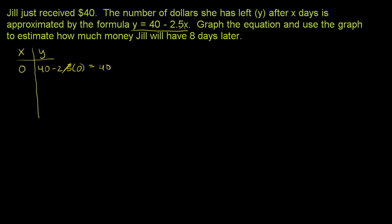Now we could do one day later, but then we're going to have decimal points. So that this part of the equation always ends up with clean numbers, let's multiply by multiples of 2. So after two days, how much money will she have? It's going to be 40 - 2.5 times 2. 2.5 times 2 is 5, so 40 - 5 is $35.